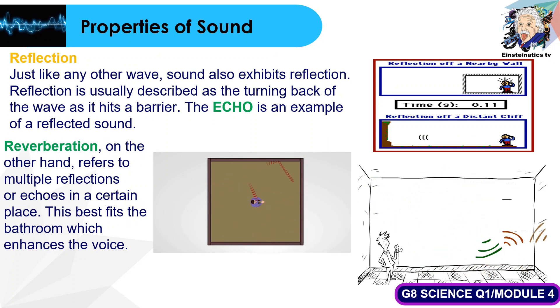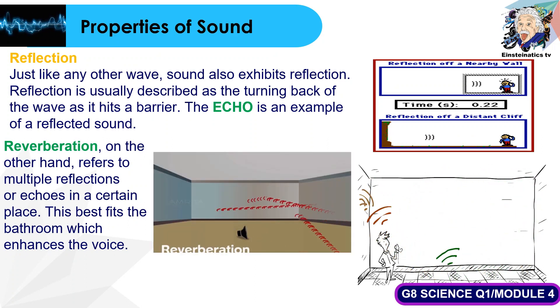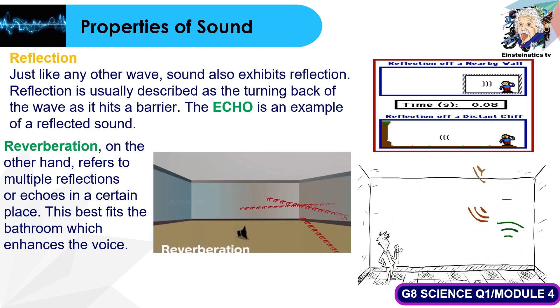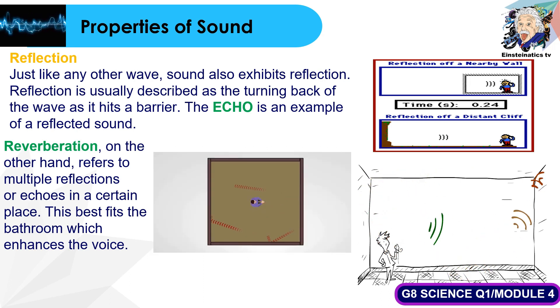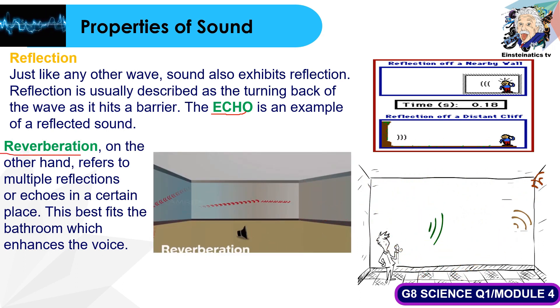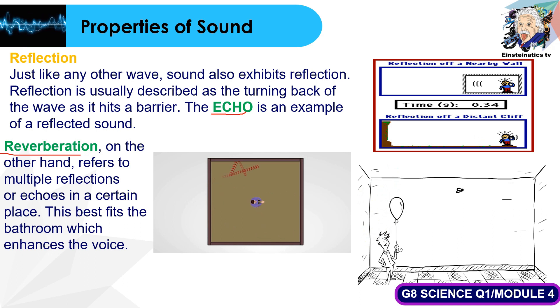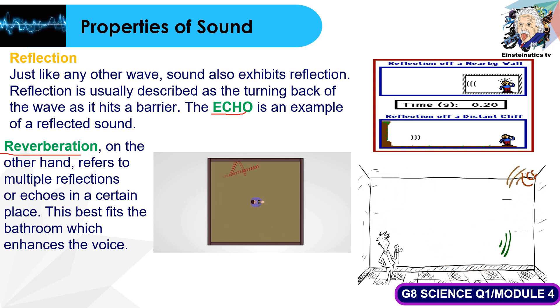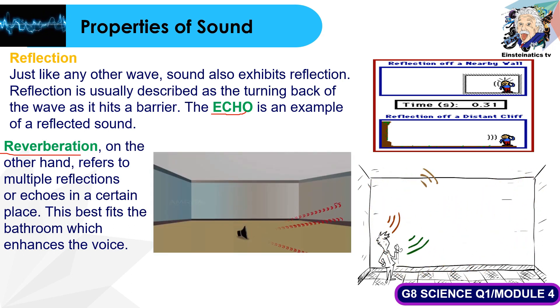The first property of sound that we are going to discuss is reflection. Reflection is simply described as the turning back of the wave as it hits a barrier. An example of reflection is what we call echo. When the sound wave returns once it hits a barrier, this is called echo. Reverberation, on the other hand, is when many echoes return to the sound source. This best fits the bathroom, which enhances the voice, or the noise you hear once you're inside the classroom.